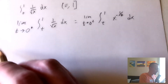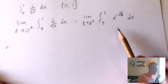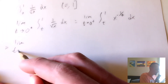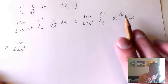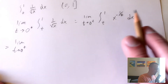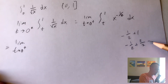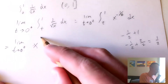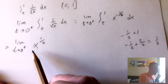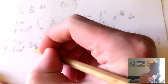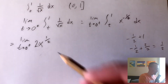The power rule says to integrate we raise our power by 1 and divide by the new power. Keeping our limit as T goes to 0 from the right: negative 1/2 plus 1 equals positive 1/2, so we get x to the 1/2. Dividing by 1/2 is the same as multiplying by 2, so we get 2x to the 1/2, evaluated over our bounds T and 1.